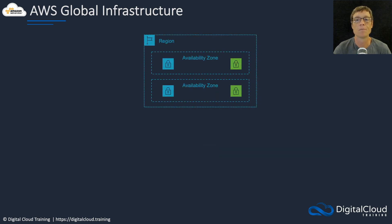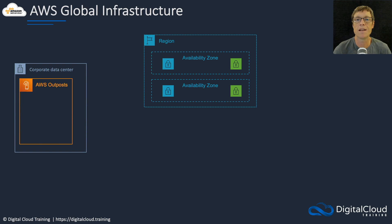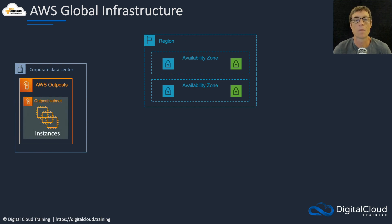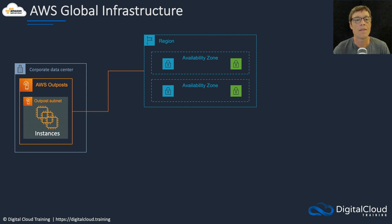So what other components are there? Let's say we have our region here with some availability zones and we've created our subnets. We might want to extend some of the services into our on-premises data center. We can use AWS Outposts to do exactly that — with Outposts you can run some AWS services on dedicated hardware within your own data center, giving you really low latency access and allowing you to develop and build applications within your own on-premises environment.